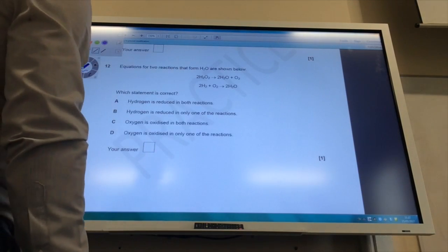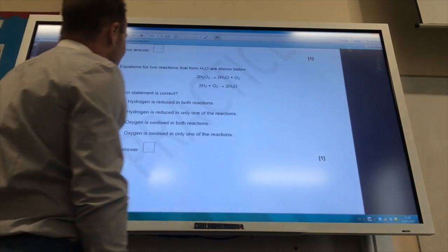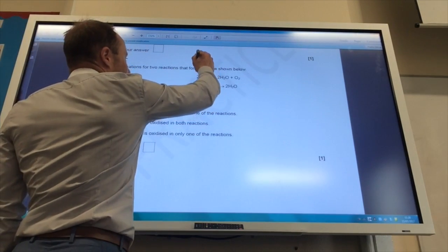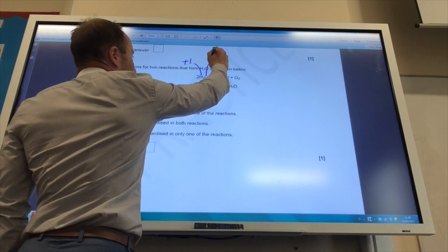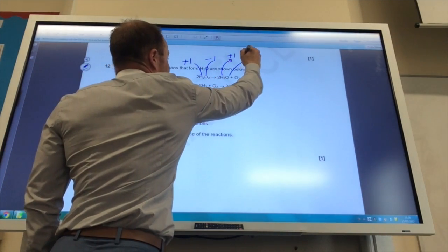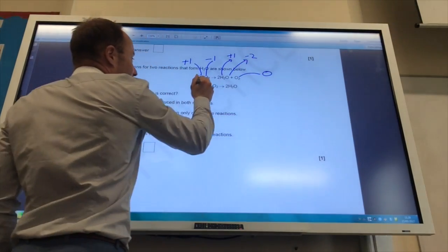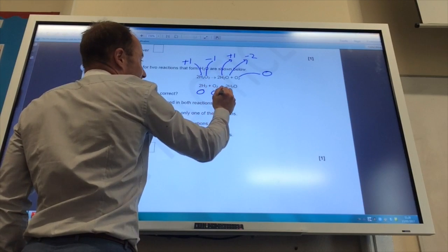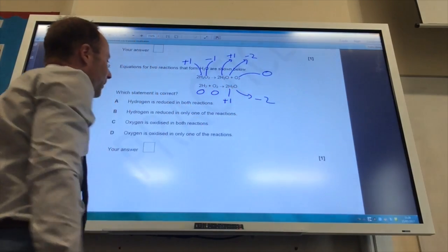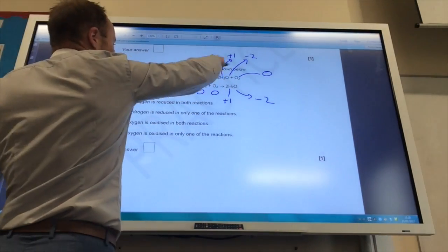Now I need to work out some oxidation states. Which statement is correct? This is a peroxide. The oxidation number of hydrogen is plus one and oxygen is minus one. Hydrogen there is plus one, and oxygen in water is minus two, and elemental oxygen is zero. For here you've got the elements there, and water is plus one and minus two. So hydrogen is reduced in both reactions. That's not correct because nothing happens to hydrogen here.